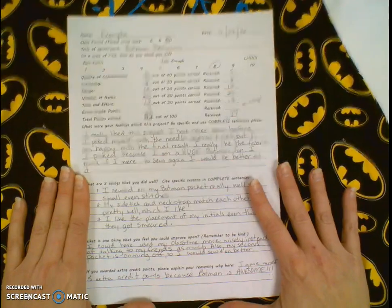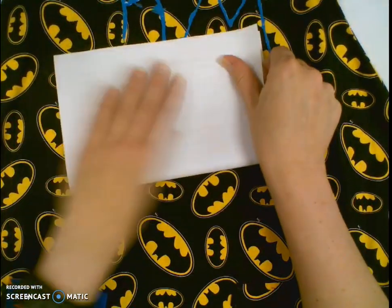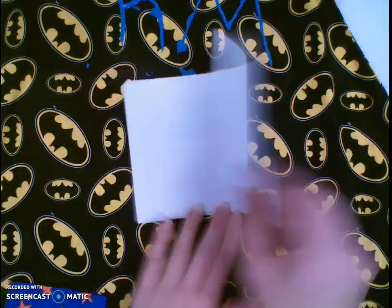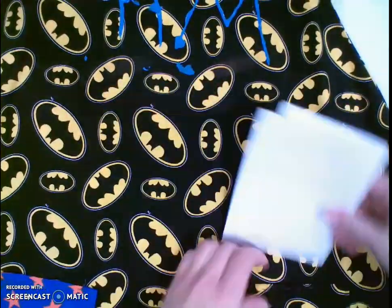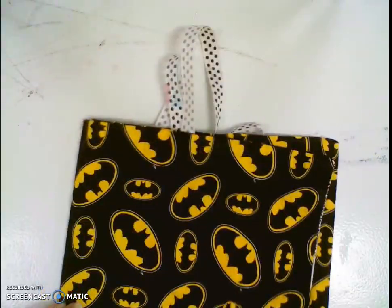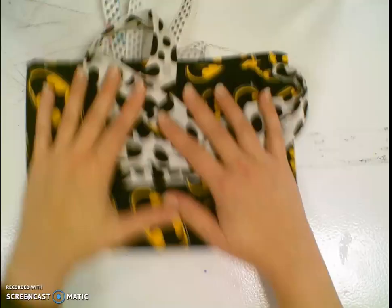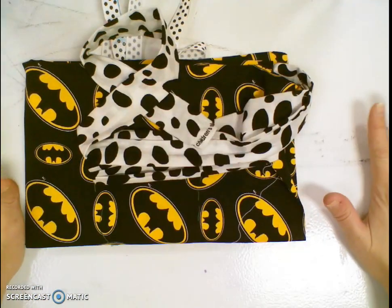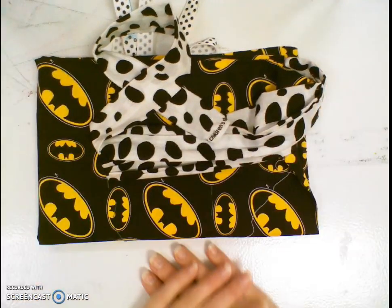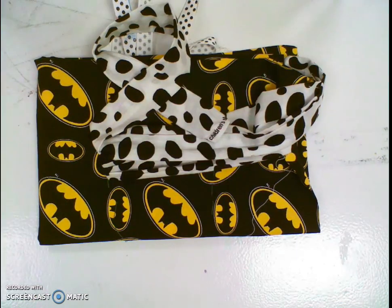When you finish with everything, what I want you to do is neatly fold your grading paper. You're going to put it in the pocket of your apron. Then I want you to neatly fold your apron and put it where we put the sewing supplies. That way everything will be all together. We'll have a nice neat stack and Miss Gamble will grade those and get them back to you. Good luck grading yourself. Remember to use specific details, complete sentences, and to be kind to yourself.